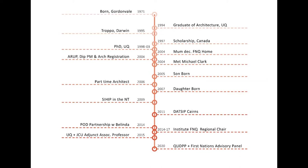Unfortunately big life events occurred again — I went back home in 2004 because my mother passed away. That period between 2004 and 2005 was very intense. I worked for Arup as a program manager, got a diploma of project management, my architectural registration, and I met Michael Clarke — my husband, a carpenter, who's fantastic. Then, like many women who decide to have children, I had a period of about five years in which I had a couple of kids and was working part time, trying to maintain a career.